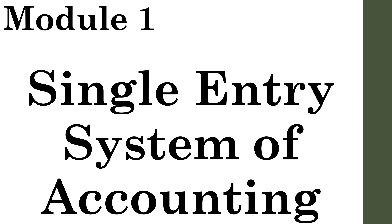Single Entry System doesn't mean that we are recording only one aspect. Actually, it is an unorganized method of recording accounting. In some transactions, we might record one aspect. In some situations, we will follow the Double Entry System. In Single Entry System also, we sometimes follow the system of Double Entry by recording two aspects of a transaction. But for the next transaction, we might record only one aspect — meaning we are not following a particular rule of Double Entry System while recording. That unorganized method of recording is known as Single Entry System.